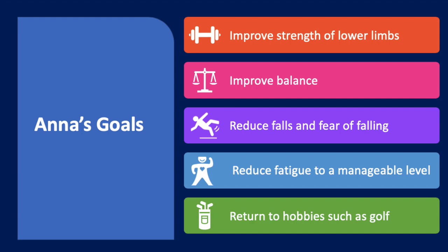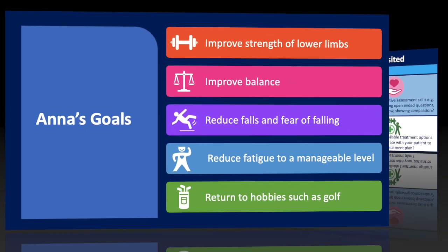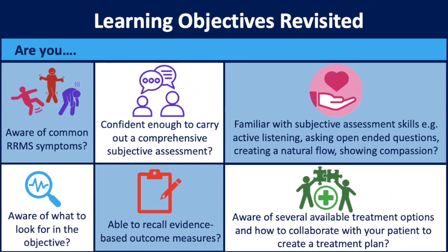Anna's goals include: improve strength of lower limbs, improve balance, increase walking ability, reduce falls and fear of falling, reduce fatigue to a manageable level, and return to hobbies such as golf. Take a look at the learning objectives and see how many boxes you can tick after watching this video. Don't worry if you don't tick them all — simply take a break and come back to re-watch the video.